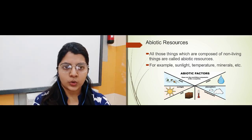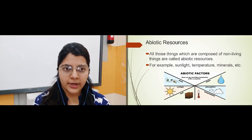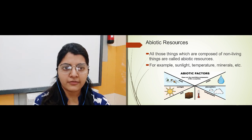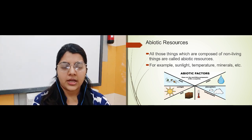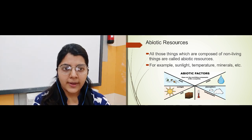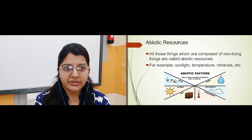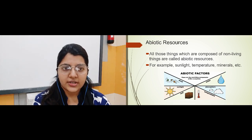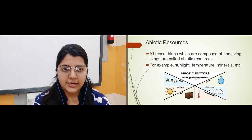So under origin we had two parts: biotic resources, which are composed of natural living organisms — plants, animals, etc. — and abiotic resources, which are composed of non-living things, for example sunlight and temperature.